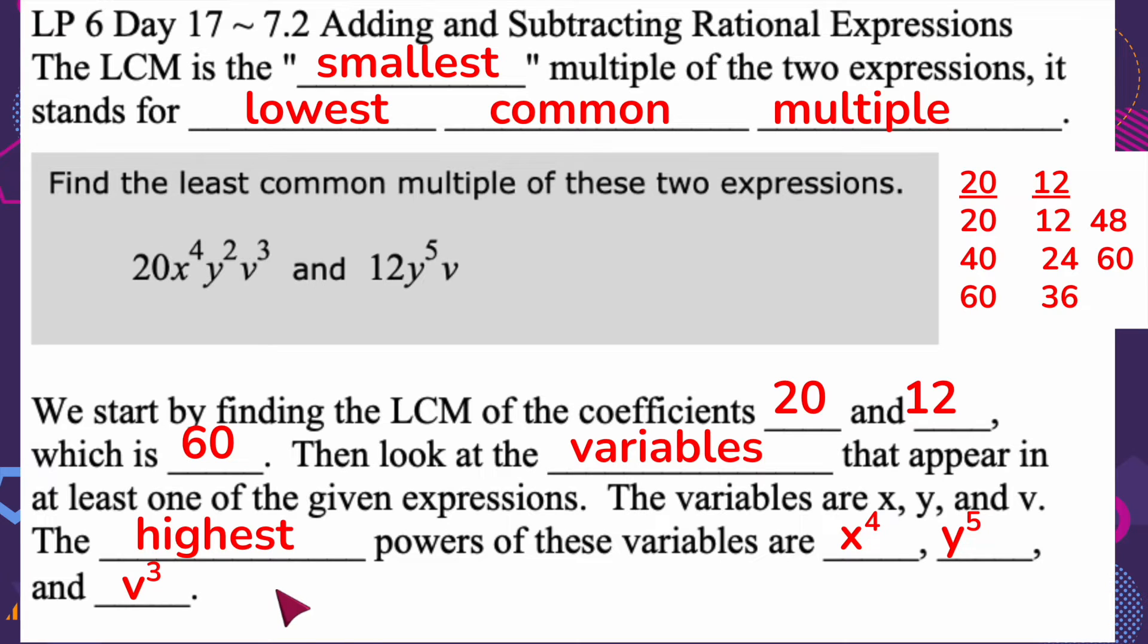So this is not like greatest common factor for simplifying. When we were simplifying fractions, lowest common multiple means that I want the biggest power, not the smallest. So this I'm actually transforming into a bigger power. So the biggest X I have is X to the 4th, the biggest Y I have is Y to the 5th, and the biggest V I have is V to the 3rd.